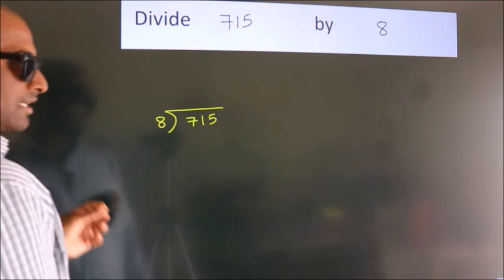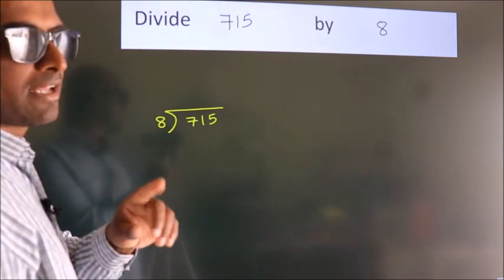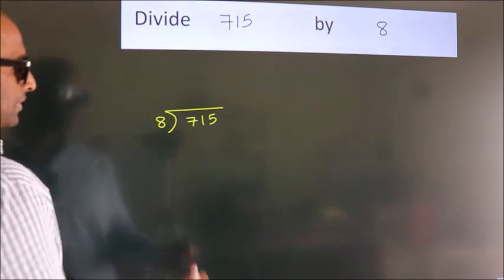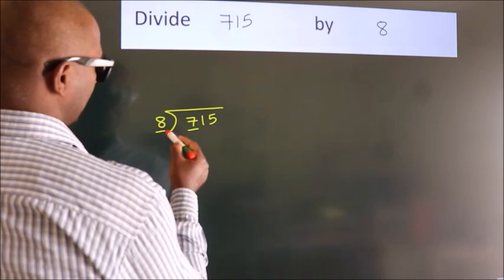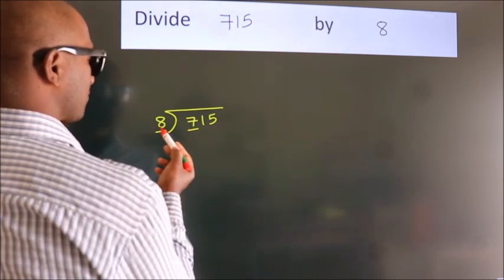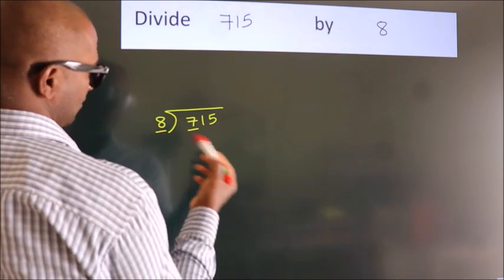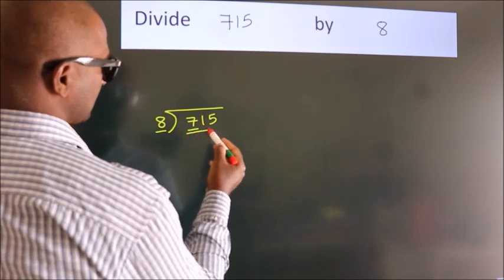This is step 1. Next, here we have 7, here 8. 7 is smaller than 8, so we should take two numbers: 71.